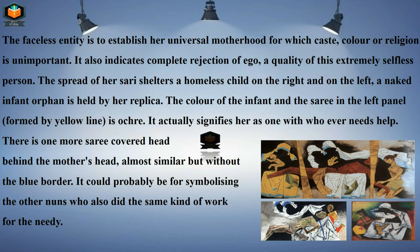The spread of her sari shelters a homeless child on the right, and on the left a naked infant orphan is held by her replica — unke jaisi ek aur nun ko wahan pe dikhaya gaya hai, unhone ek naked infant orphan ko pakda hua hai. The color of the infant and the sari in the left panel formed by the yellow line actually signifies her as one with whoever needs help.